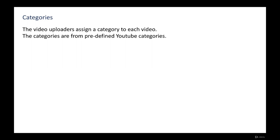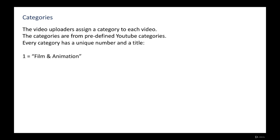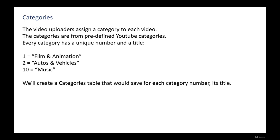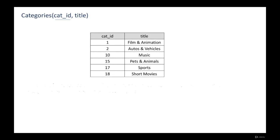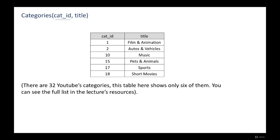Video uploaders assign a category to each video from a predefined set of YouTube categories. Every category has a unique number and a title. For example, 1 is 'Film and Animation', 2 is 'Authors and Vocals', and 10 is 'Music'. We will create a categories table that saves for each category number its title. The table contains two columns: cat_ID which is the unique category ID, and title which is a string describing the category. There are 32 YouTube categories, though this table shows only six of them.